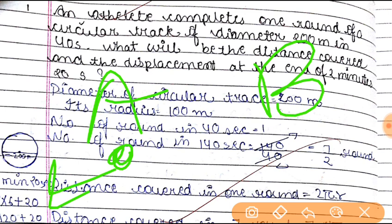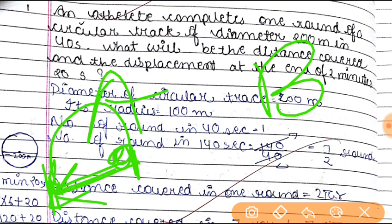Then, distance and displacement. Distance traveled by an object is defined as the length of the actual path covered by an object. Displacement of an object is defined as the shortest distance traveled by an object — it is generally not in a straight line; it can be a little curved or anything. So this is our important concept.